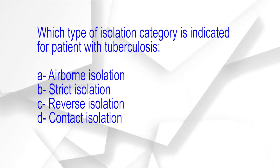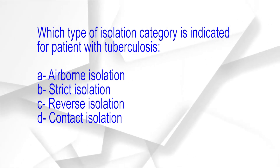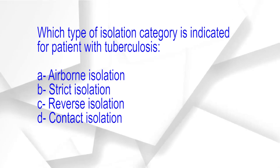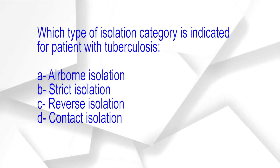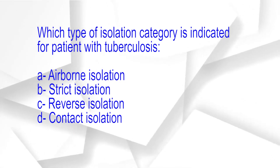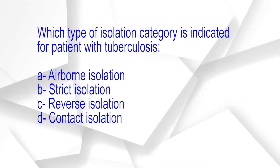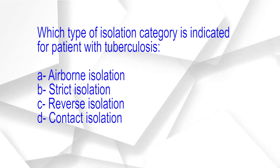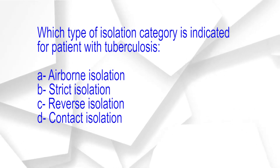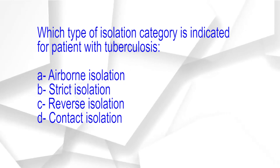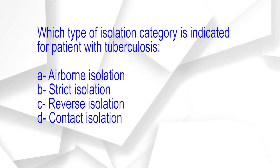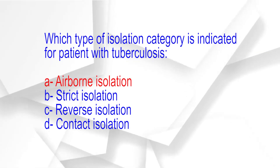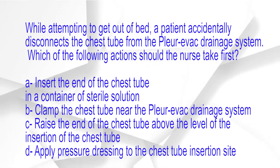Which type of isolation category is indicated for a patient with tuberculosis? A. Airborne isolation. B. Reverse isolation. C. Strict isolation. D. Contact isolation. The correct answer is option A: Airborne isolation.